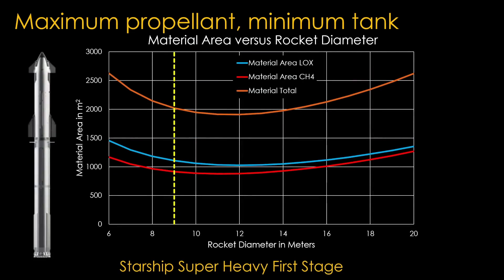For the Super Heavy first stage, it is the same story as the Falcon 9 first stage. It is smaller than optimum, so that the second stage can be close to optimum. The best size would be about 11 meters. The Starship 2 and 3 versions would be happier at 12 meters, but they will stay at 9 meters.